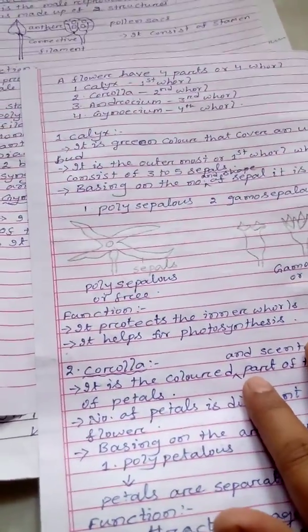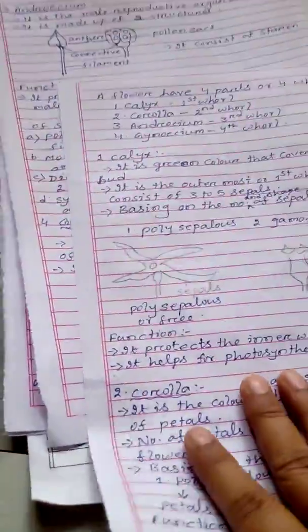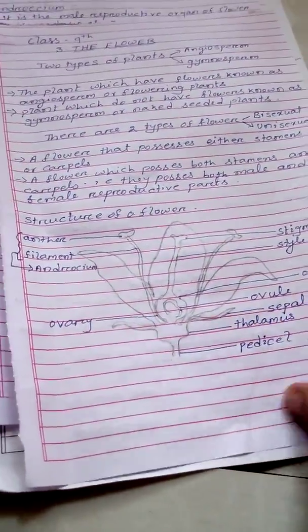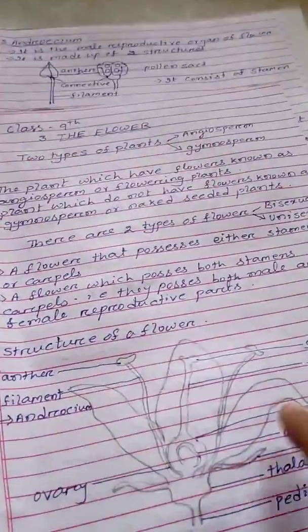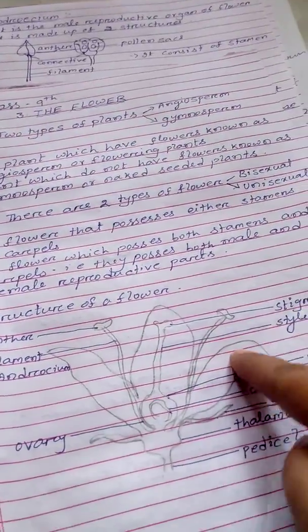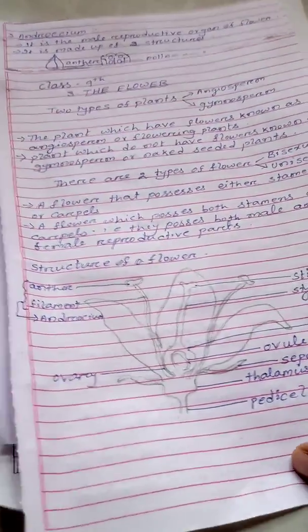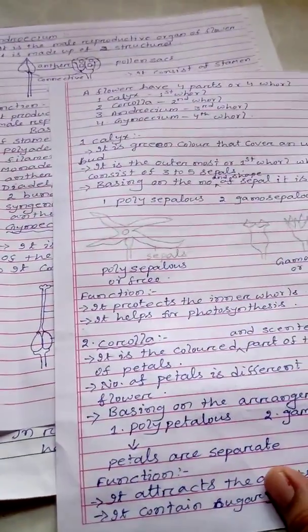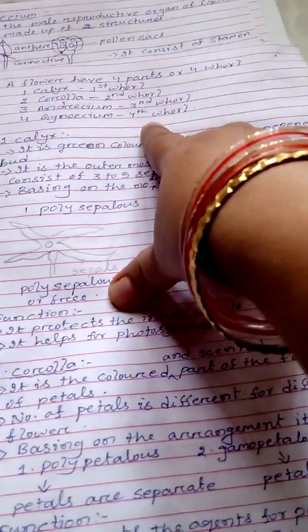Now we have to know what is a whorl. Actually there are four whorls in the flower. The first whorl is calyx, the second whorl is corolla, the third whorl is androecium which is the male part, and the fourth whorl is gynoecium which is the female part.